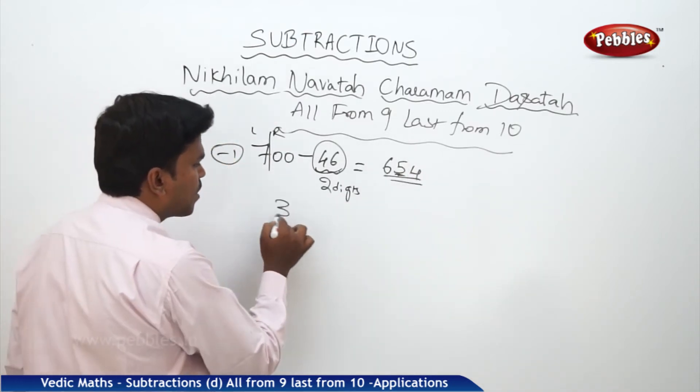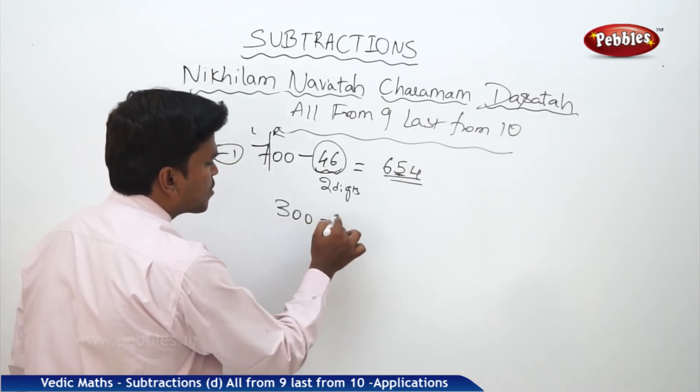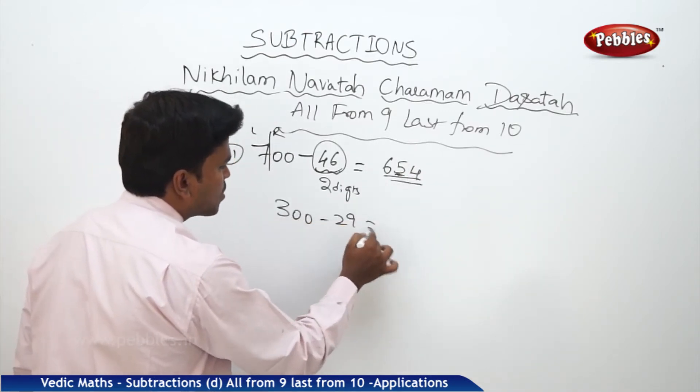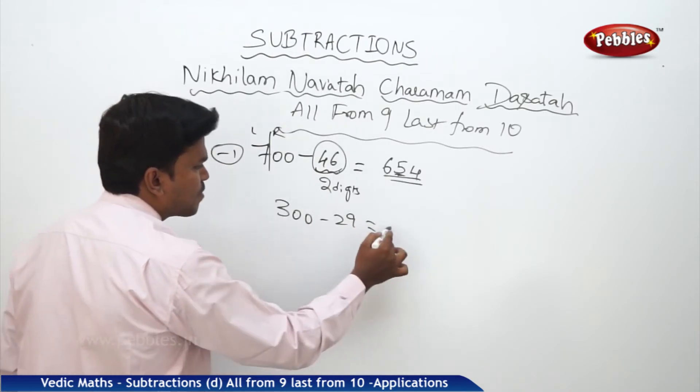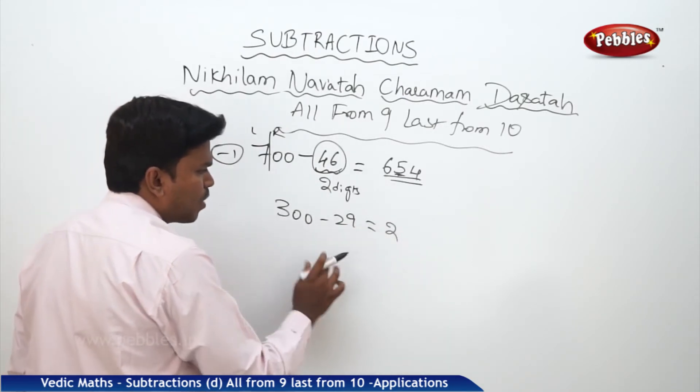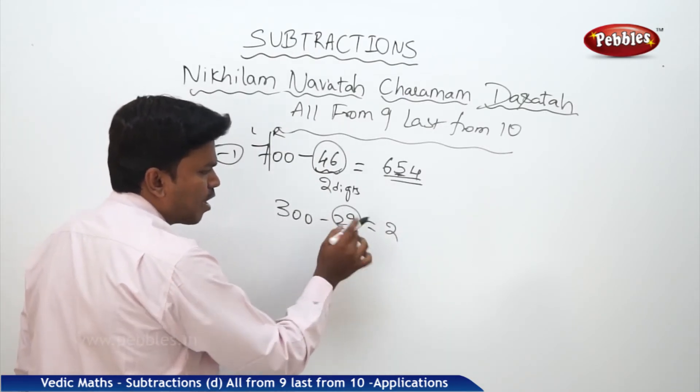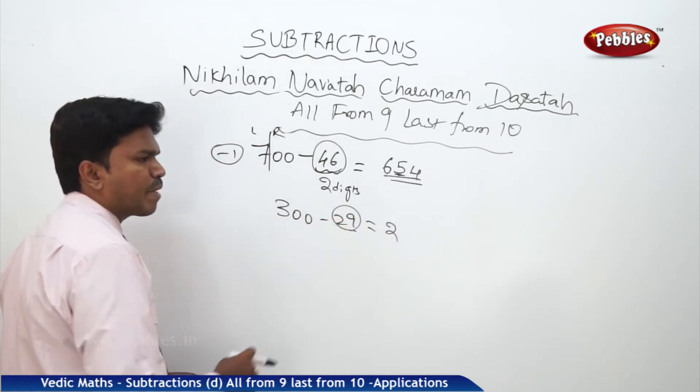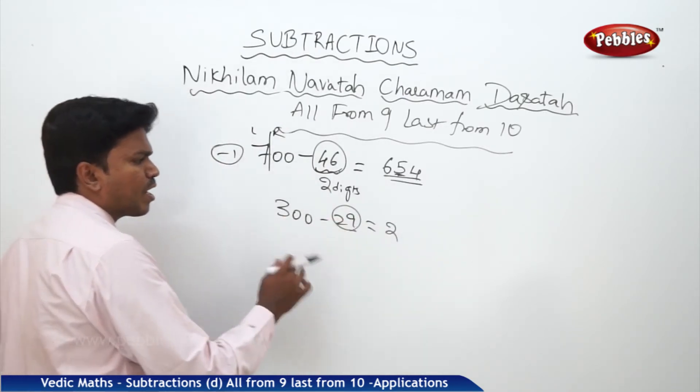One more example: 300 minus 29. 3 becomes 2, and applying 'all from 9, last from 10' to 29 gives 71. So the answer is 271.